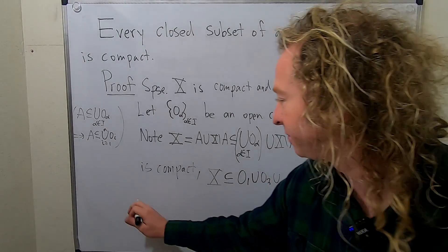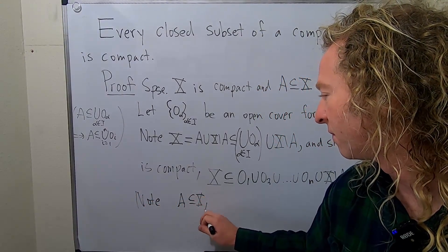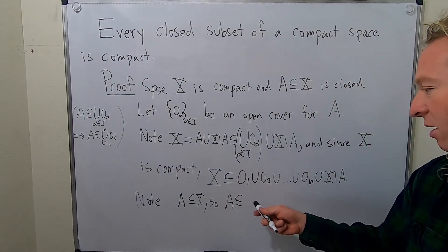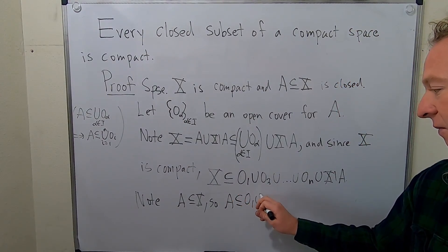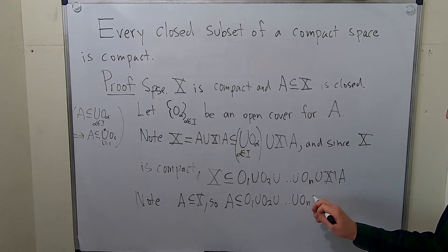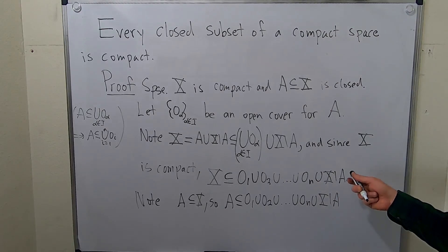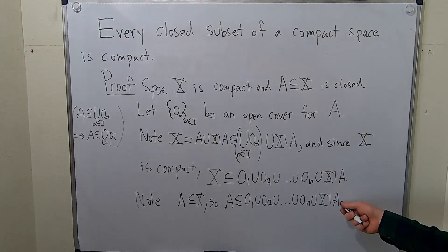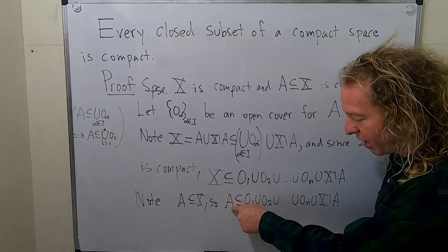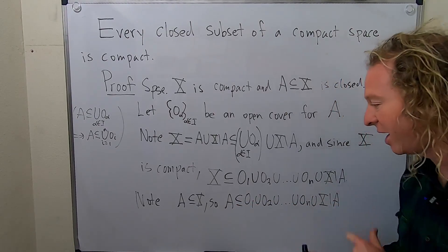But now notice A is contained in capital X. So A is contained in, well, A will be contained in this union here. So we started, oh, oh, and check this out. You can drop this one now because A, there's no way any elements of A are in this set because this is all the elements that are not in A.